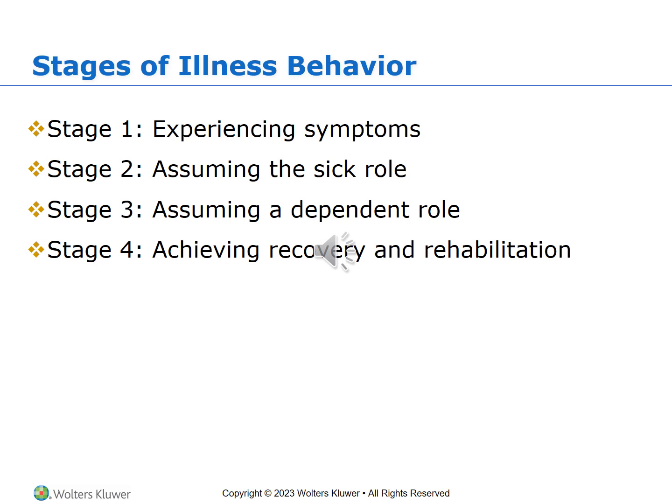In Stage 4, recovery and rehabilitation begins in the hospital and concludes at home. If you visit a primary care doctor's office and receive treatment, rehabilitation and recovery could occur at home — for example, antibiotics are prescribed, you pick up your prescription, take your medications at home, and remain in that dependent role until you completely recover. Think of COVID where you had to self-isolate or quarantine yourself until you recovered.